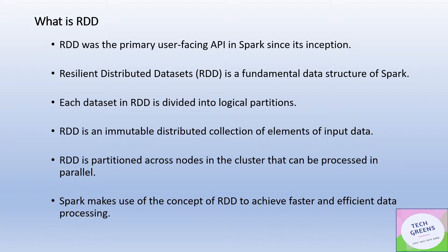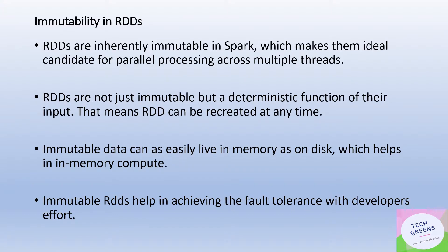Immutability is the right design thinking because it helps Spark achieve faster and more efficient data processing. Since an RDD is immutable, Spark doesn't have to keep track of the state of that RDD while processing it — there's no need to preserve or maintain the state of the RDD during processing.